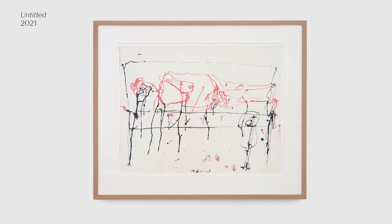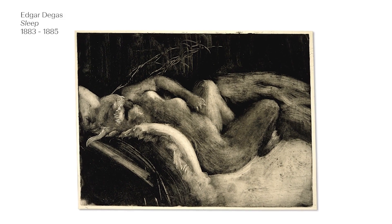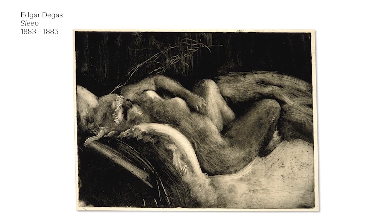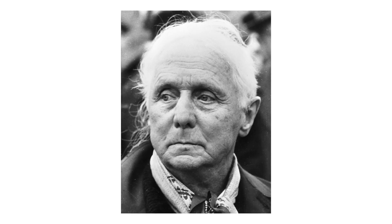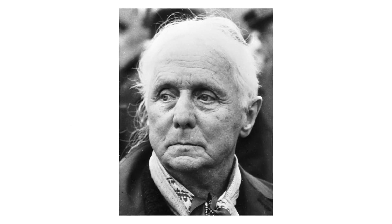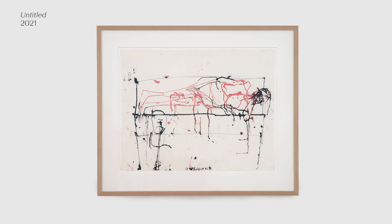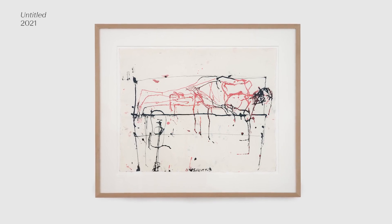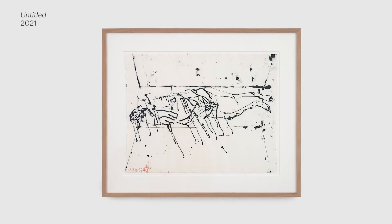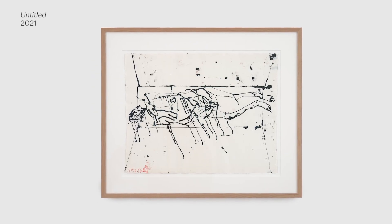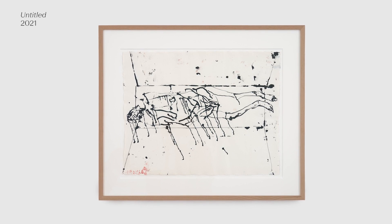In that regard Baselitz positions himself within another art historical lineage, nodding to artists such as Edgar Degas who made extensive use of the monotype, nodding to artists such as Max Ernst and his surrealist colleagues who used rubbing, printing and other transfer techniques in order to precisely remove the hand and the mastery of the hand and the elegance of the manually drawn line.